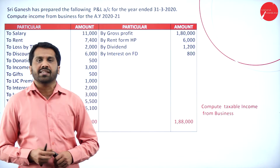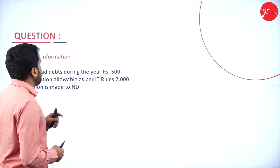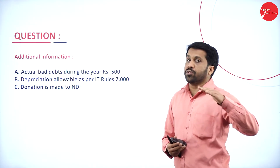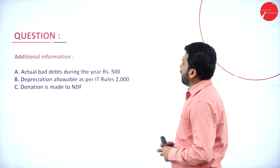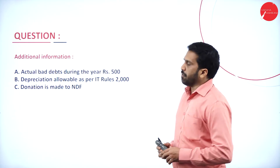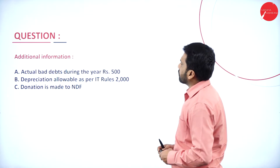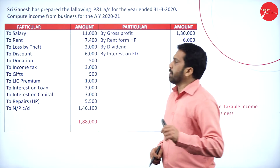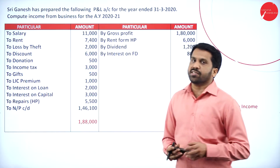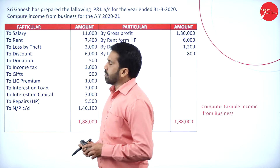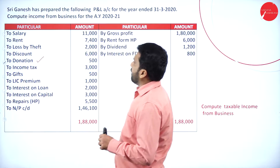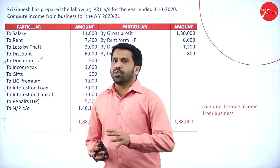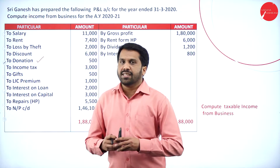We have to see which items are related to business and which are not. Salary — part of business, we will not touch. Rent — part of business. Loss by theft — also part of business, it is common. Discount — part of business. Donation to NDF (National Defense Fund) — nothing to do with your business, so it is an other-than-business item.